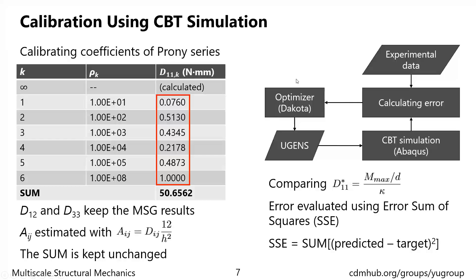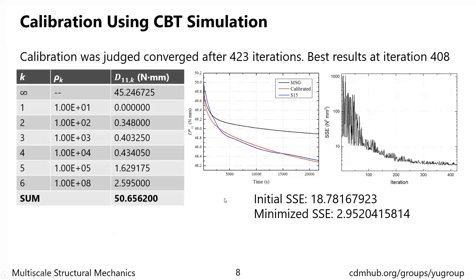The CBT simulation also has the potential for material calibration. Here we have a demonstrative example for calibrating the D11. Note that this D11 is different from D*11; it is the term of the D matrix defining the sectional bending stiffness of the shell element. The optimizer is Dakota. It directly modifies the UGENS based on the comparison of D*11 during relaxation. The error is evaluated using the error sum of squares, SSE. After calibration, the material relaxes faster and follows closer to the experiment. After more than 400 iterations, the SSE is reduced from the initial value of 19 to 3.